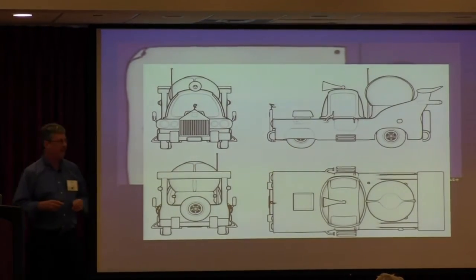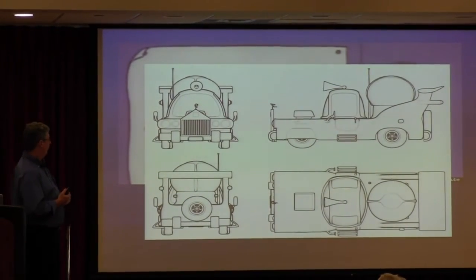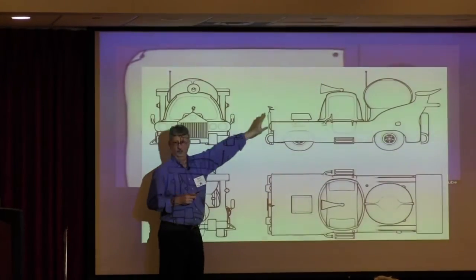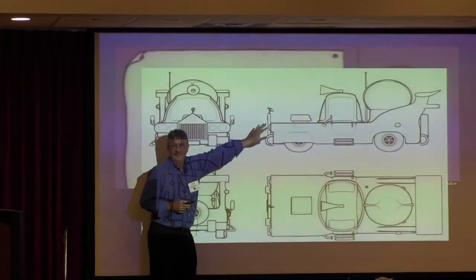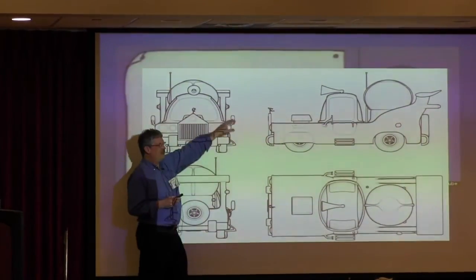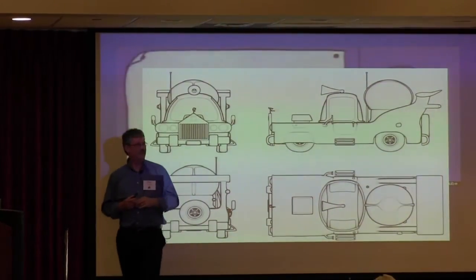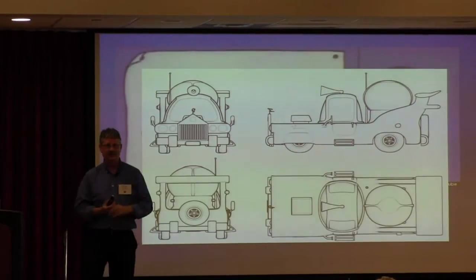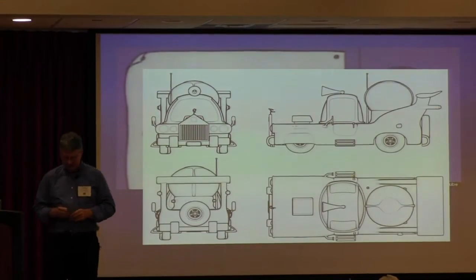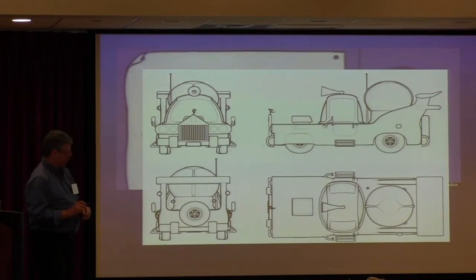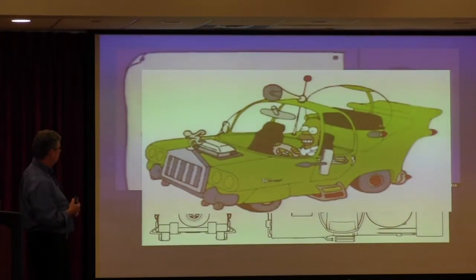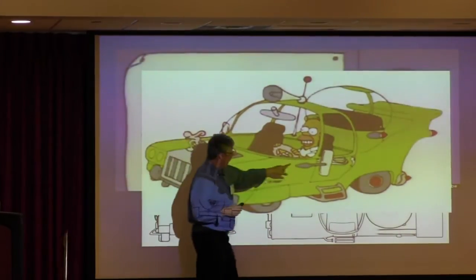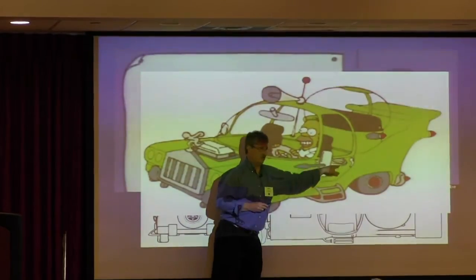We go to wire frames, we start designing the car. Remember that orb I was asking you to think about? You know what that's for? The children! The orb is for the children — it's kind of like a personal Pope-mobile where you put the kids up there so they can see everything and they're kind of out of your way. They go from wire frames to a small-scale mock-up.